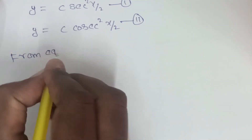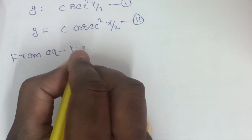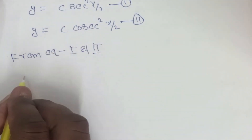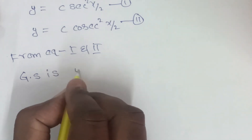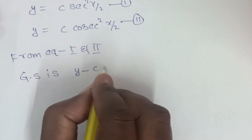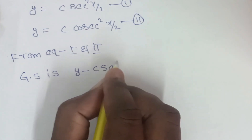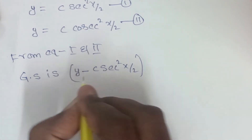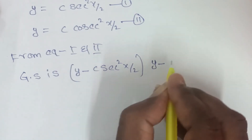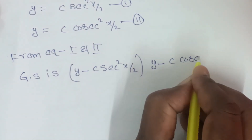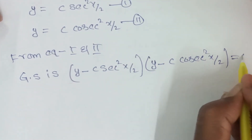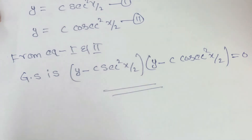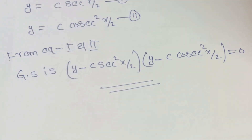From equations 1 and 2, the general solution is (y − C·sec²(x/2))(y − C·cosec²(x/2)) = 0. This is one of the most important problems in unit 2. Thank you to all my dear students.